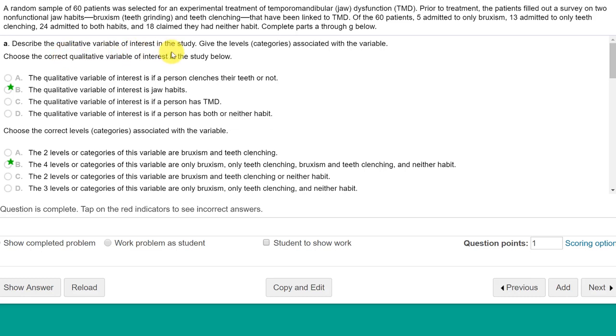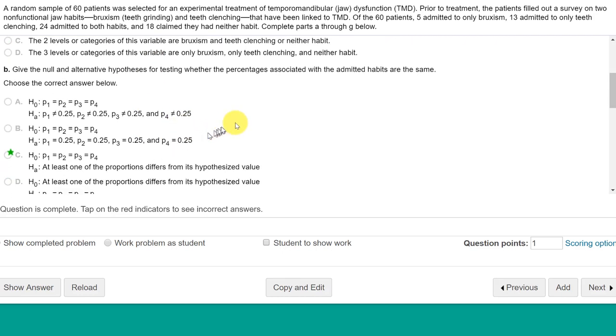Let's go through it. Describe the qualitative variable in interest, and it is a qualitative variable of interest in jaw habits. There are four levels or categories that we talked about.